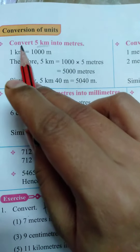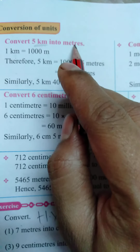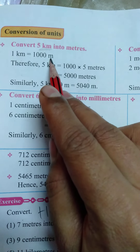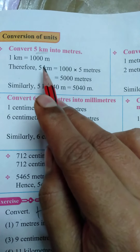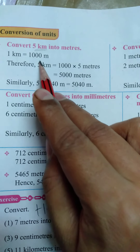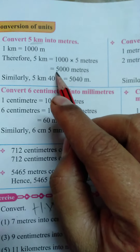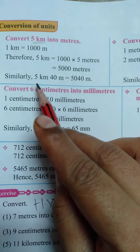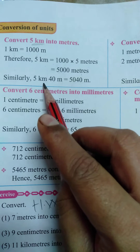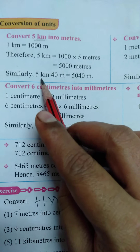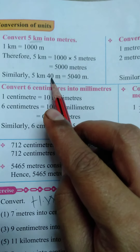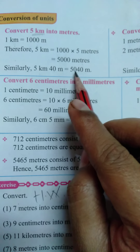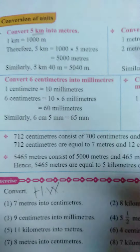Conversion of units — it means now: convert 5 kilometres into metres. As you know, 1 kilometre is equal to 1000 metres, therefore 5 kilometres is equal to 1000 into 5 metres, so the answer is 5000 metres. Similarly, if we take 5 kilometres and 40 metres, then 5 kilometres is 5000 metres, plus 40 metres, and we add them — that is 5040 metres.